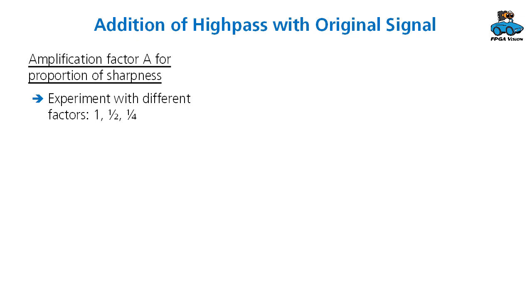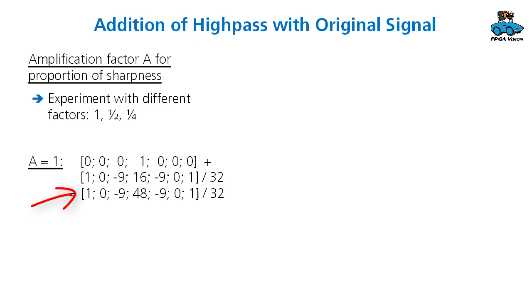The filter coefficients are then multiplied with the amplification factor A and added to the original signal. So for A equals one, you have here the original signal. This is the high pass filter and then you get the result for the complete function of the sharpness filter. Here's another value for A and you get different coefficients. In our example, we take A equals one to get a very good sharpness, to get a high sharpness so that we can see something. And maybe later on, you can reduce that to have a smaller sharpness factor.